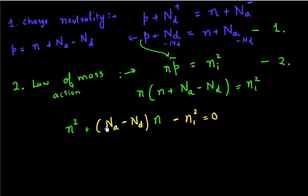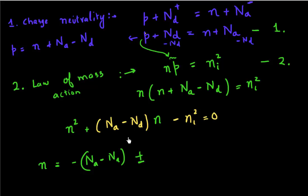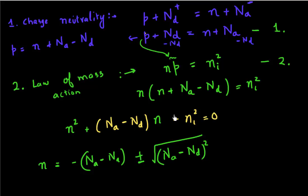This has the form Ax squared plus Bx plus C equals zero. The solution is N equals minus B plus or minus the square root of B squared minus 4AC, divided by 2. Here B is (Na minus Nd), A is 1, and C is negative ni squared, so it becomes plus 4ni squared under the square root.